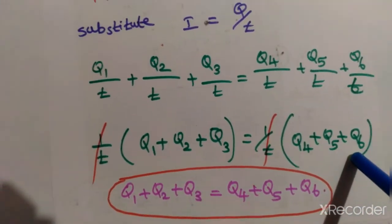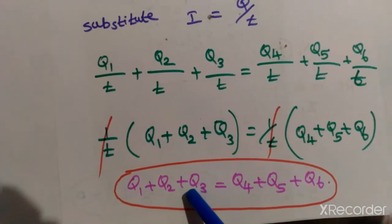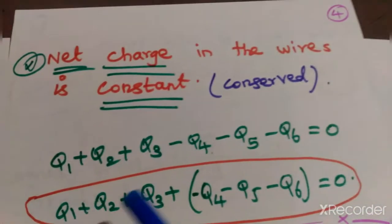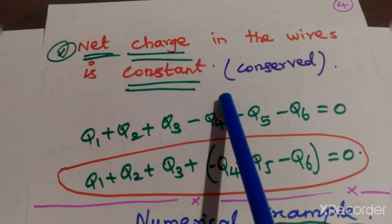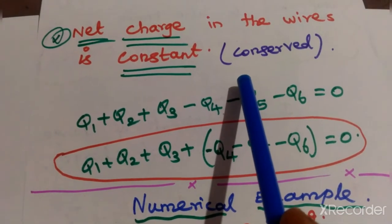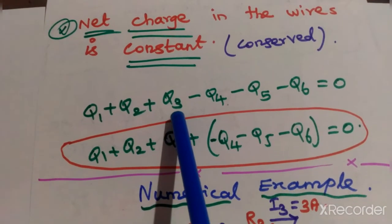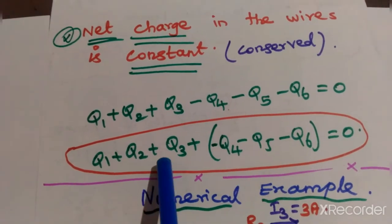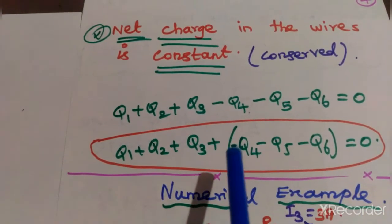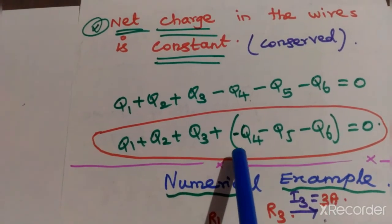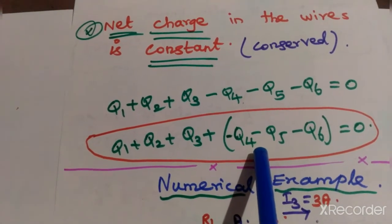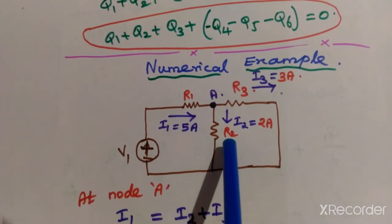The remaining equation is: q1 plus q2 plus q3 equals q4 plus q5 plus q6 — meaning charge entering the node equals charge leaving the node. This is the law of conservation of charge: the net charge in a closed loop is constant — it cannot be created or destroyed. KCL follows this law of conservation of charge.